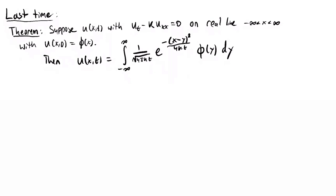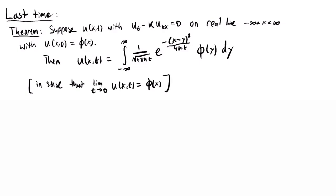One minor technical point: if you just plug t = 0 into the formula you're dividing by zero, which is problematic. What we really mean is that the limit as t → 0⁺ of u(x,t) equals φ(x). We showed when deriving the formula that this limit condition holds, and it was one of the key properties used to arrive at the formula.